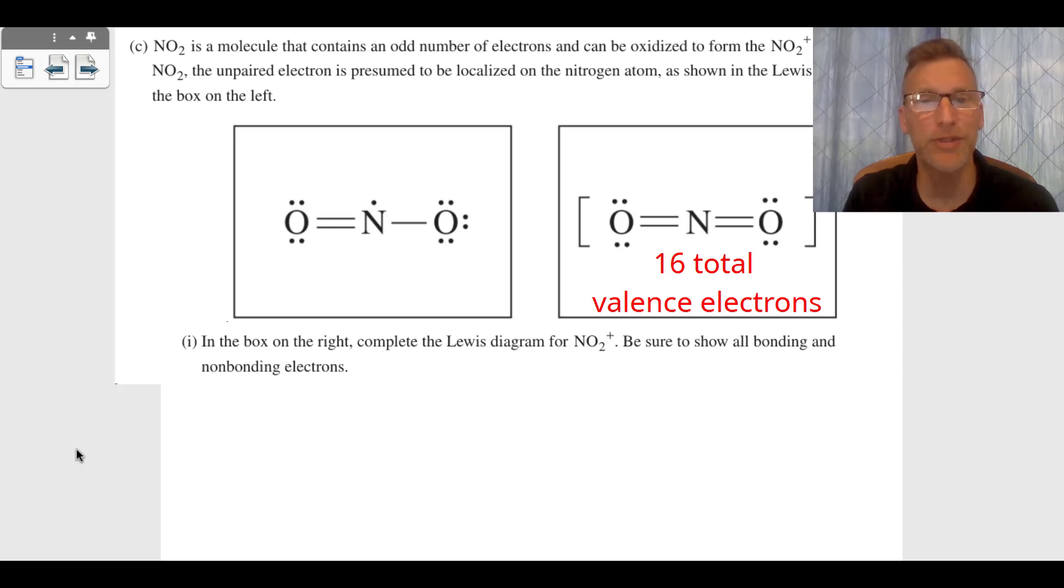It's got nitrogen with two double bonds, and that Lewis dot structure on the right-hand side is the Lewis dot structure of NO₂⁺. That's going to be a third point.